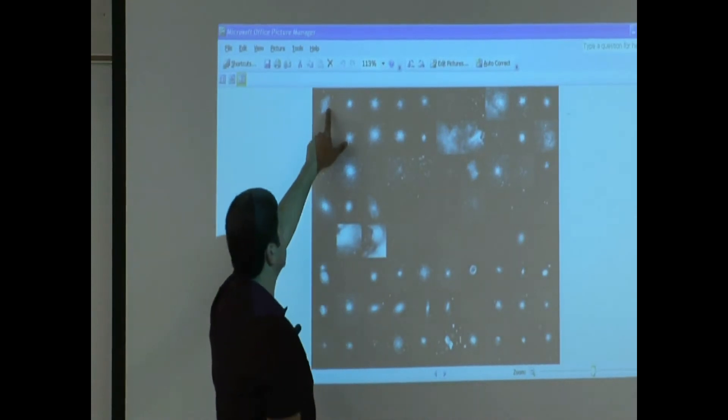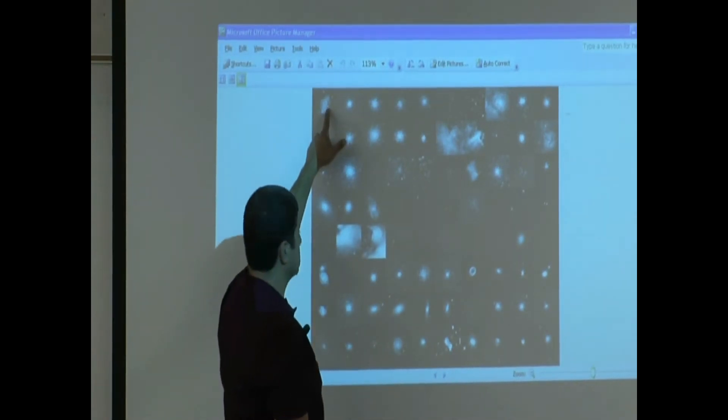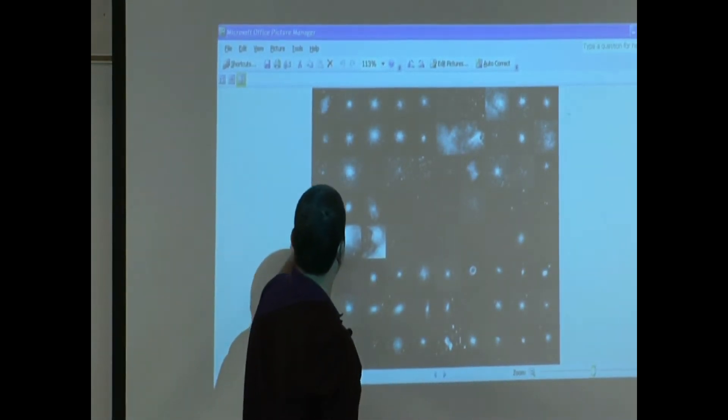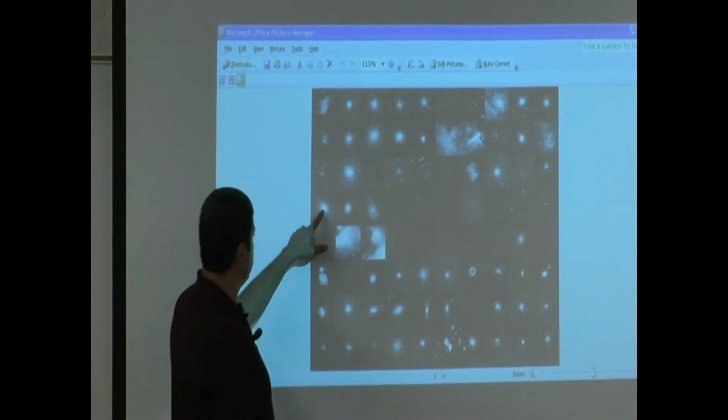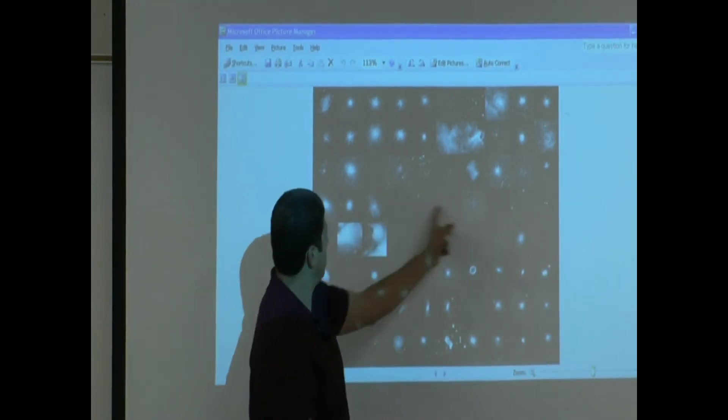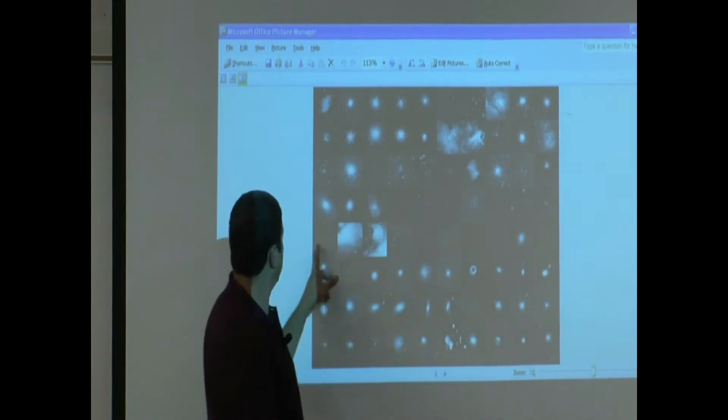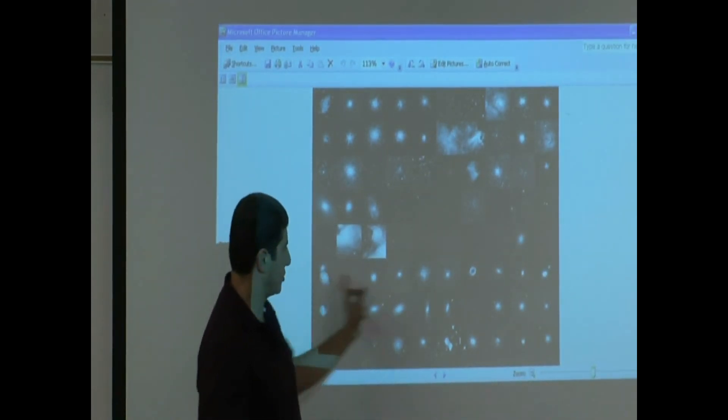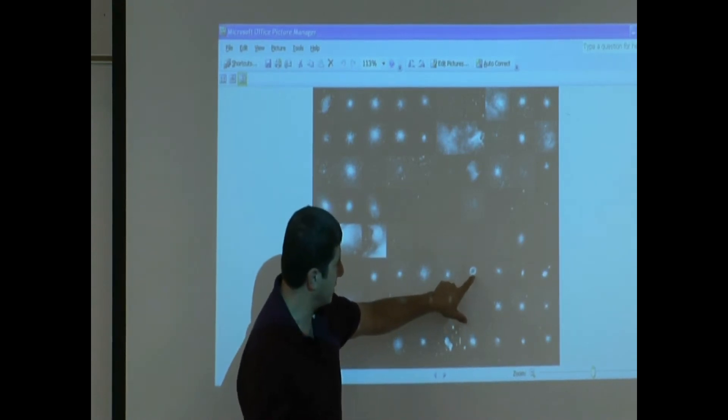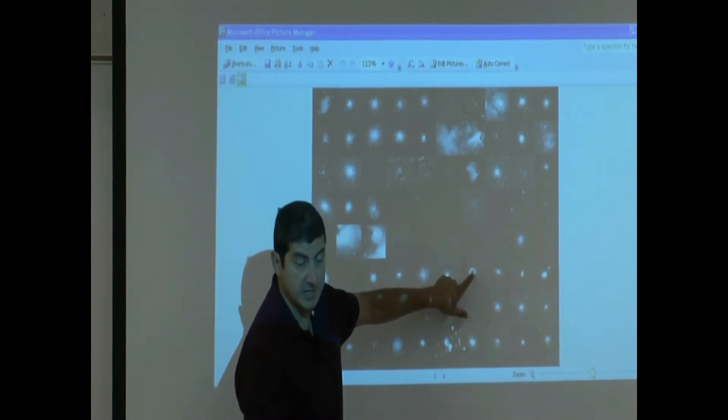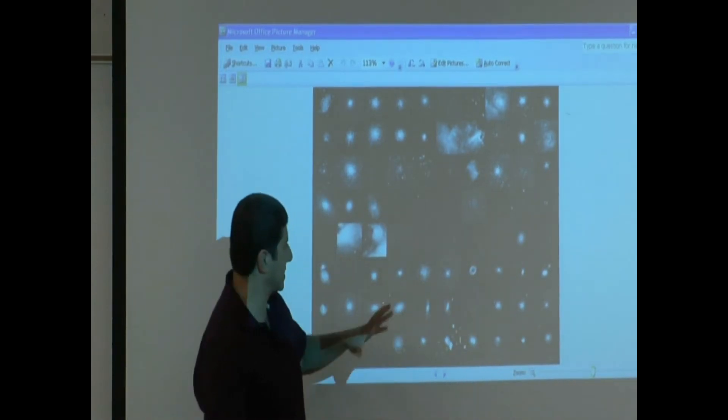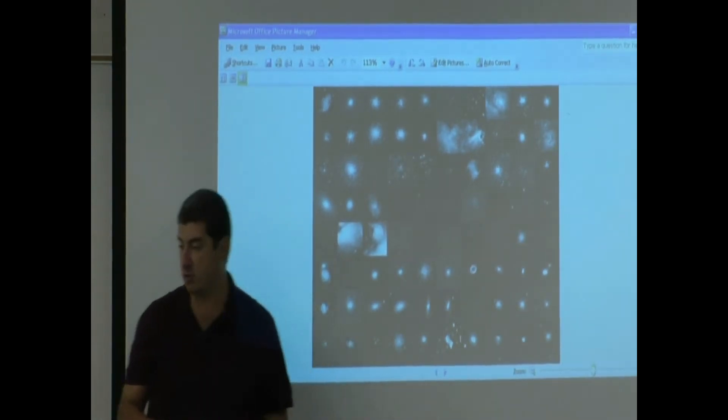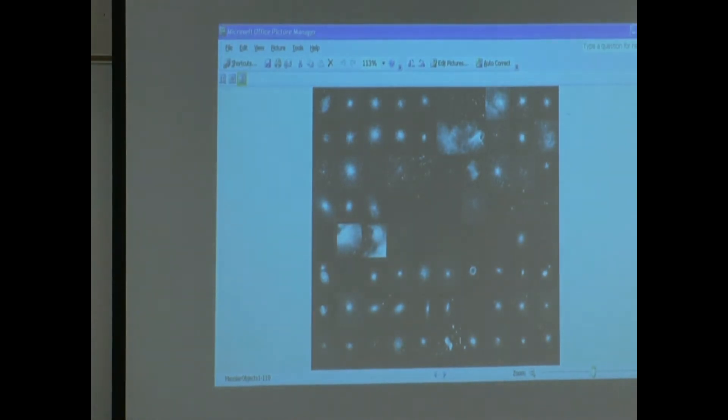The first one is the Crab Nebula. M42 is the Orion Nebula. So if you go 40, 41, 42, this is the Orion Nebula. Then you can keep going. This looks like a planetary nebula, you see. Inside of it, the center is the white dwarf.